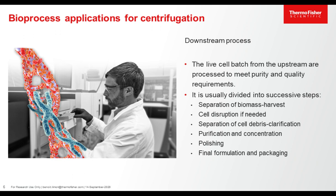The downstream process is the entire process of concentrating and purifying the product of interest to meet purity and quality requirements. It is usually divided into successive steps. The first is the separation of the biomass, also called harvest, in which the centrifuge may play an important part.